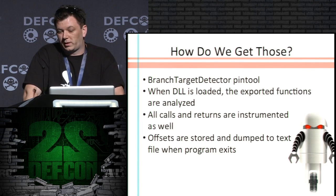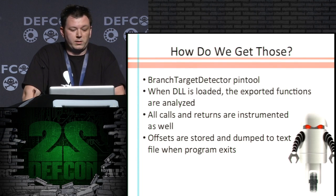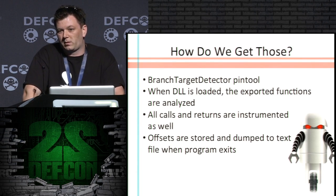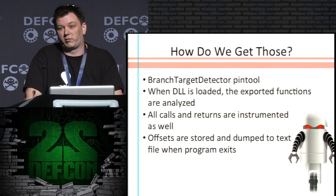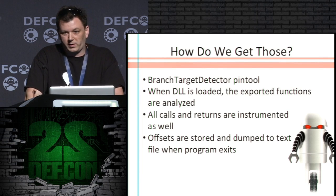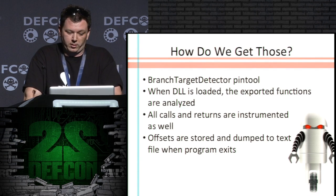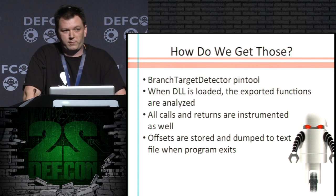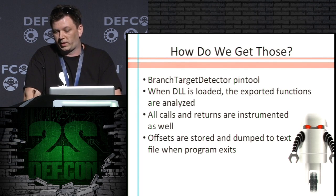The first thing I did was build a PIN tool to give me those addresses. When a DLL is loaded, it iterates through all the exported functions, analyzes them, and finds the calls. If it's a direct call, we put the target on the whitelist and then the instruction afterwards. If it's an indirect call, just the instruction afterwards because we don't know where it goes yet. In addition, all calls and returns are instrumented at the instruction level, because not every function is among the exported ones. These offsets are stored when the program ends, dumped to a text file, with some post-processing to add them to the whitelist and remove duplicates.